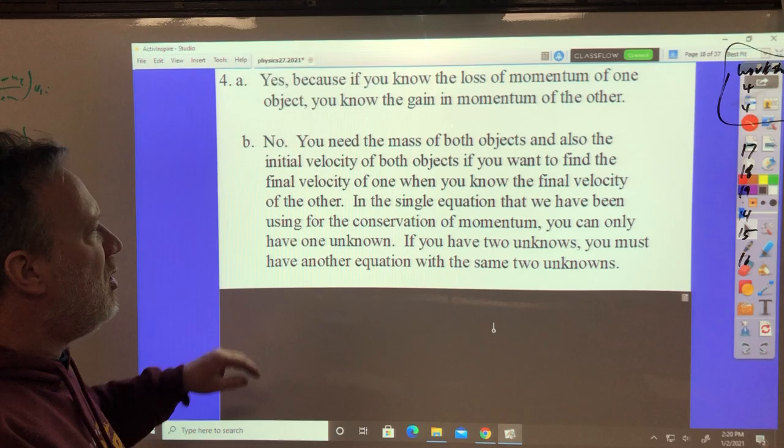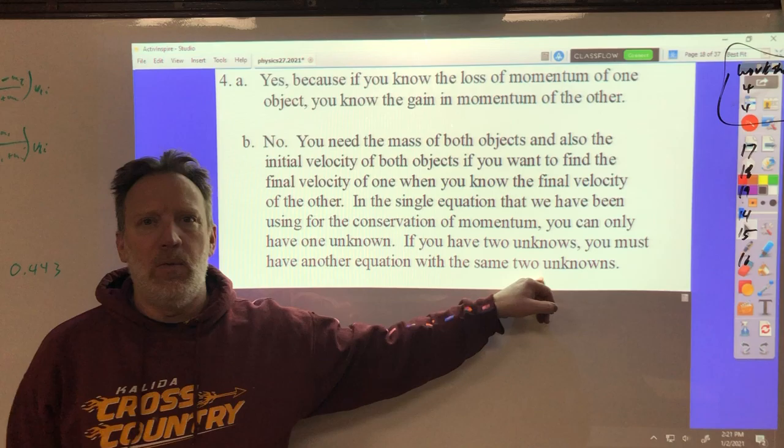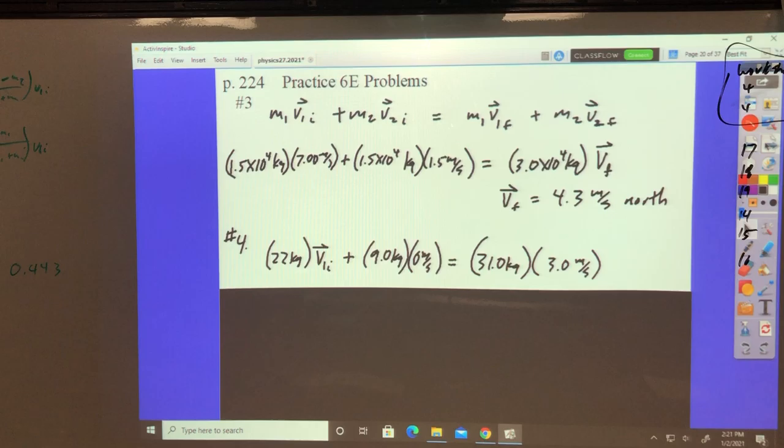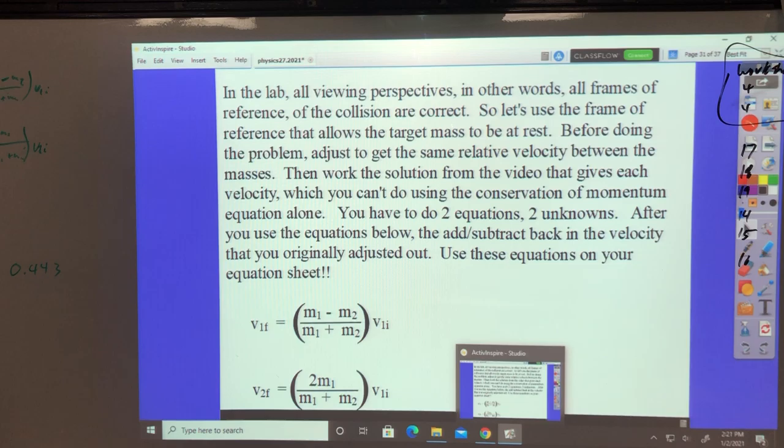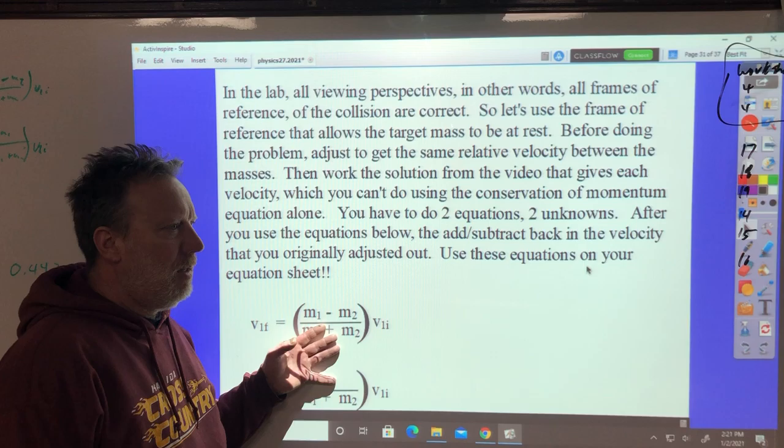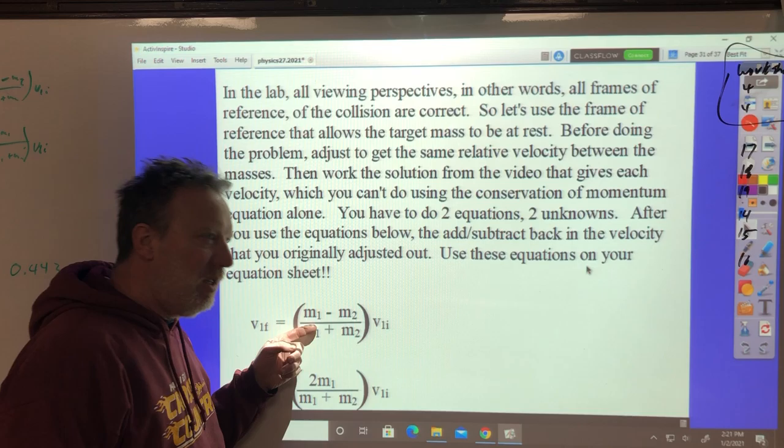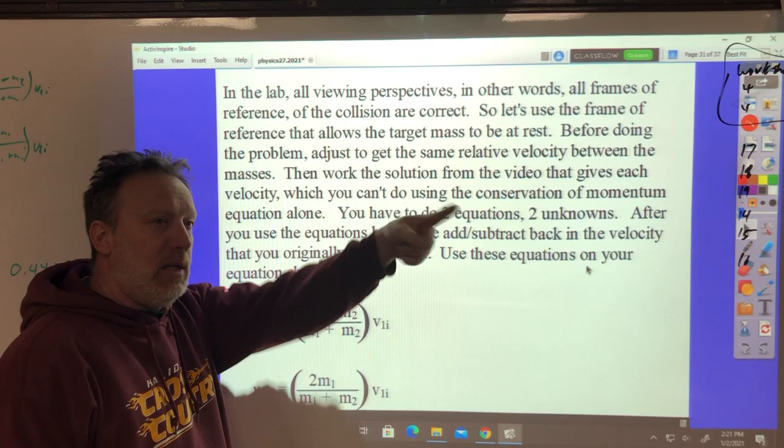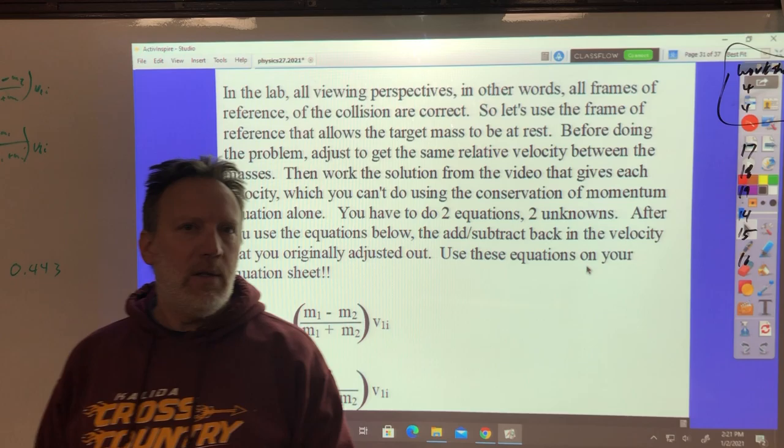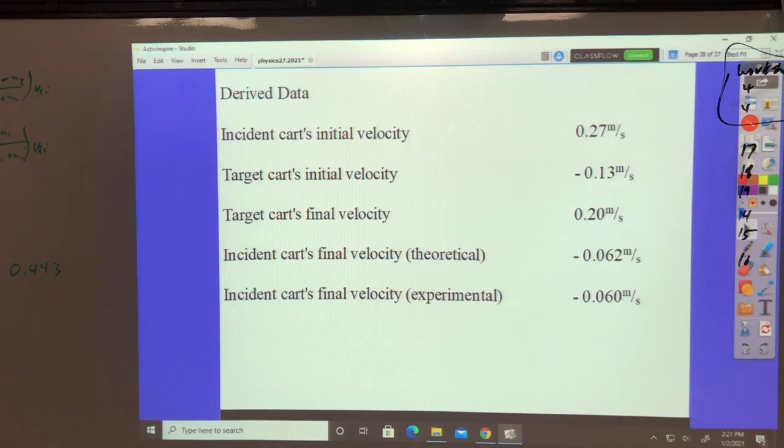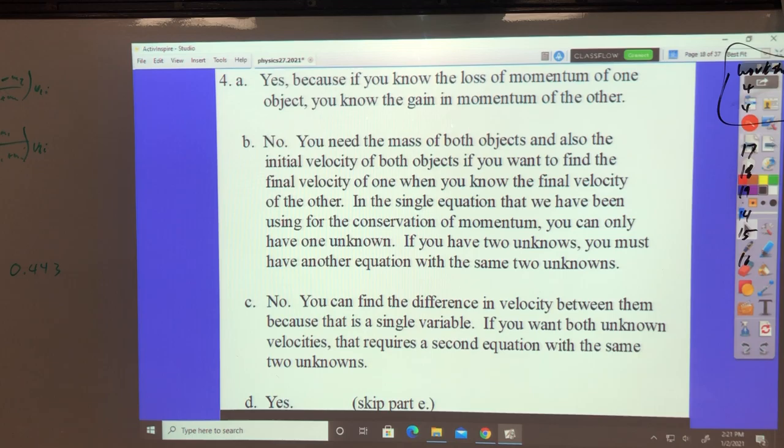Now, in the single equation we've been using, you can only have one unknown. If you have two unknowns, you must have another equation with the same two unknowns. That's what made this work back here. How did I know I didn't have either final velocity? So, I didn't have either final velocity. I had two unknowns. Well, what made this work is, we conserved, if you went back to that video and watched me do it, I conserved momentum. That's an equation. And I conserved kinetic energy. That's a second equation with the same two unknowns. And I did a lot of jumping through hoops to do a two equations, two unknowns. So, that's what works in this special case.